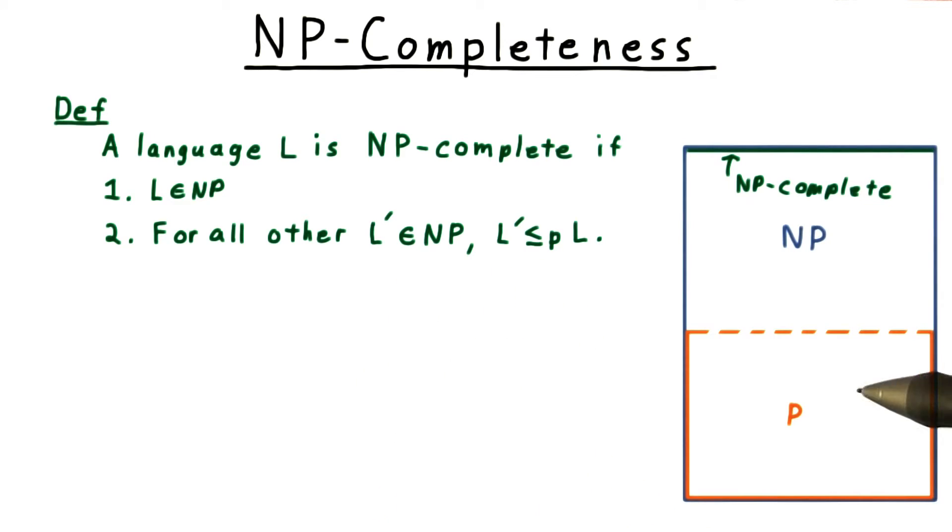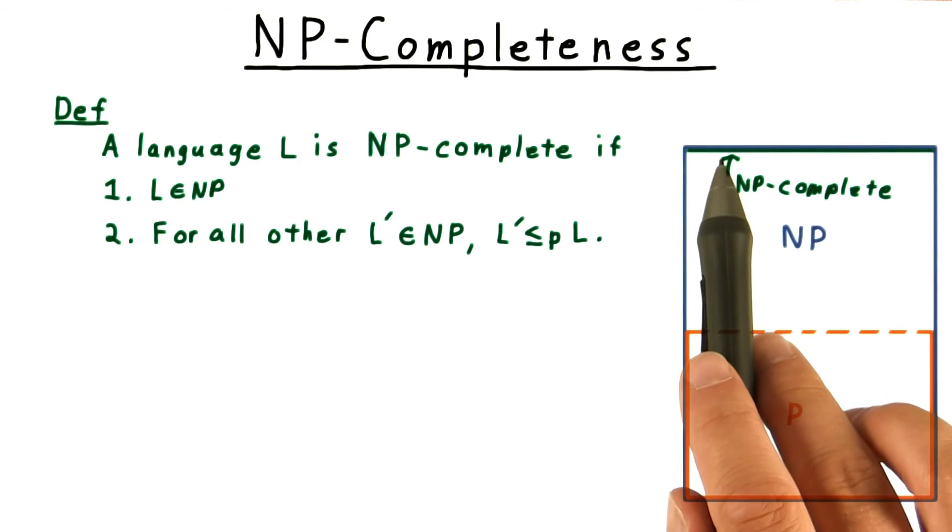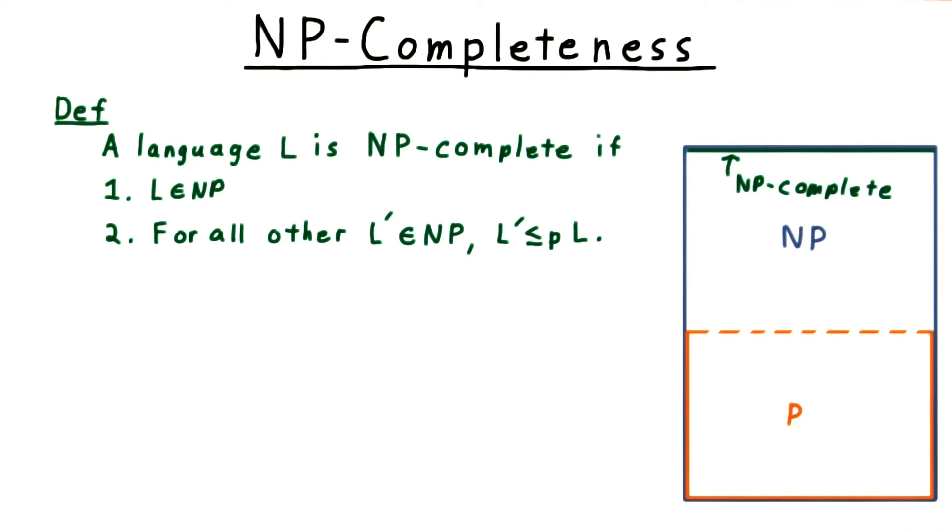Recalling our picture of P and NP from the beginning of the lesson, the NP complete problems were the ones at the very top, and we called them the hardest problems in NP. We can't have anything higher that's still in NP, because if it's in NP, then it can be reduced to an NP complete problem.